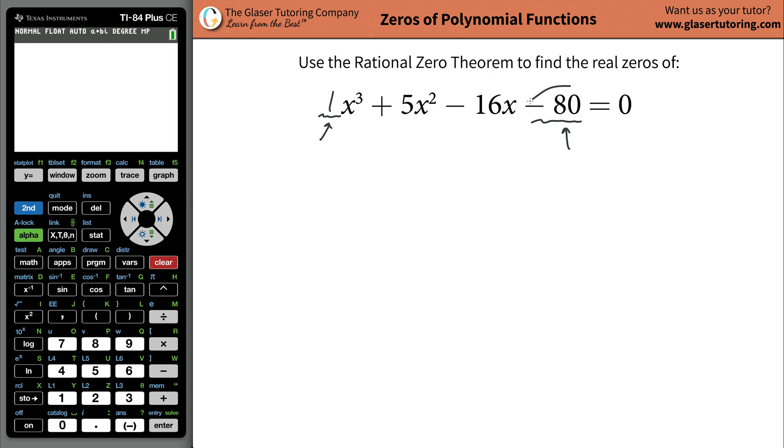And you were to take then the factors of the constant term and divide it by then the factors of your leading coefficient. Some combination of those divisions will be a rational zero of the function.